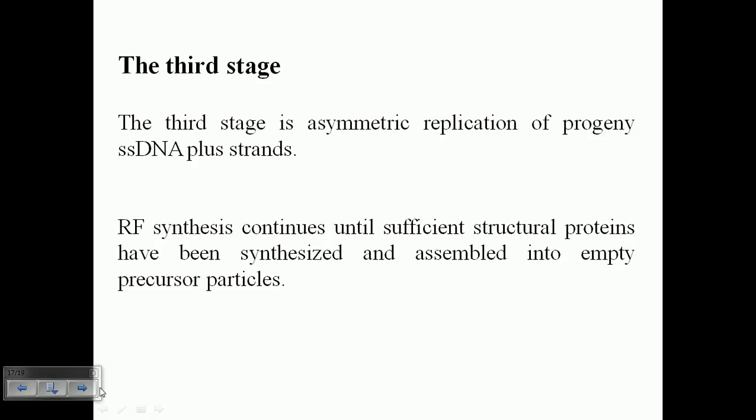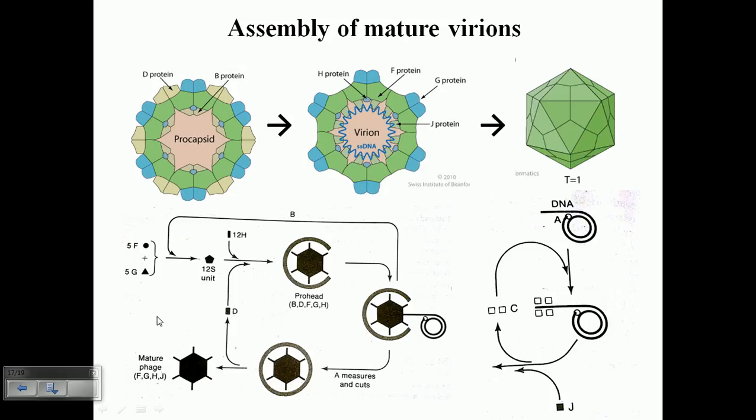Negative strand single stranded circular DNA inside the head. So here's how the assembly of mature virus or virion occurs. Here is the procapsid. We call it a procapsid because it's the early capsid. In this early capsid it's unmodified. We have B proteins and D proteins attached.